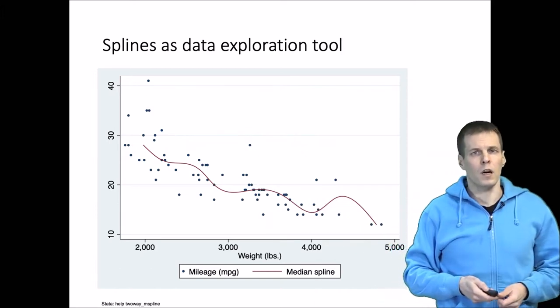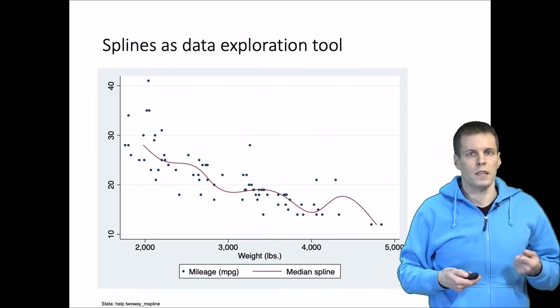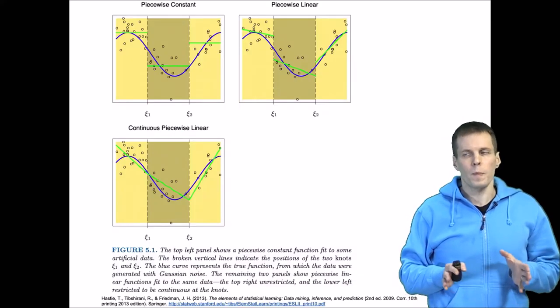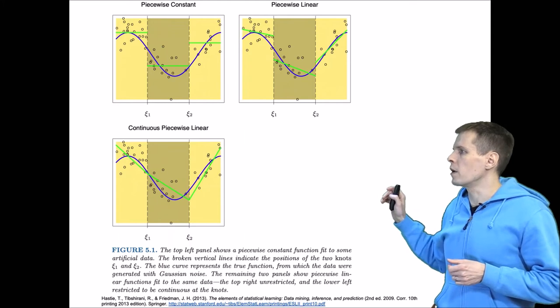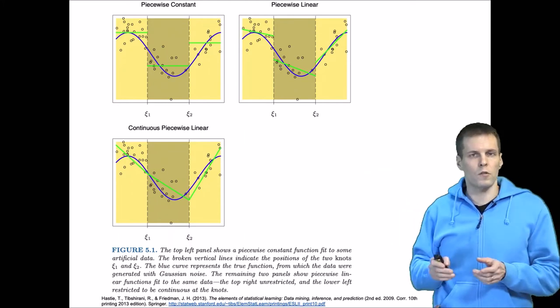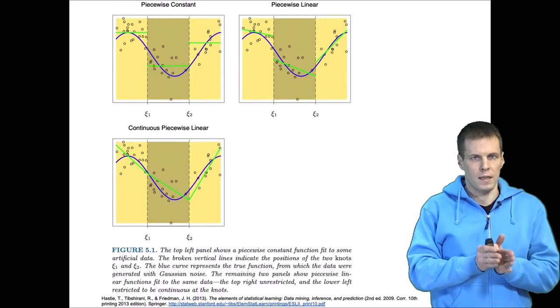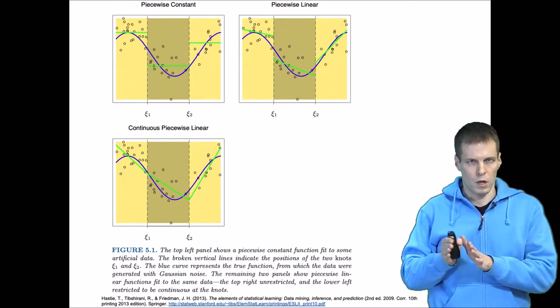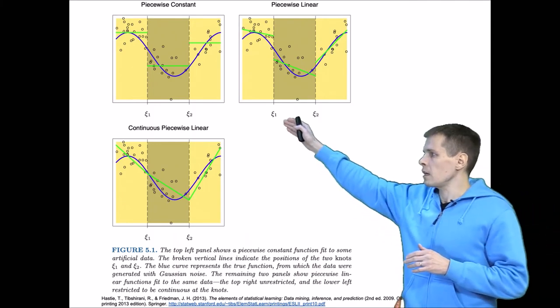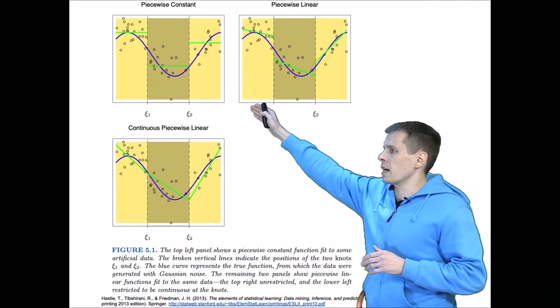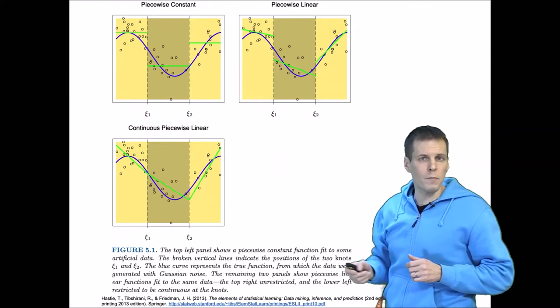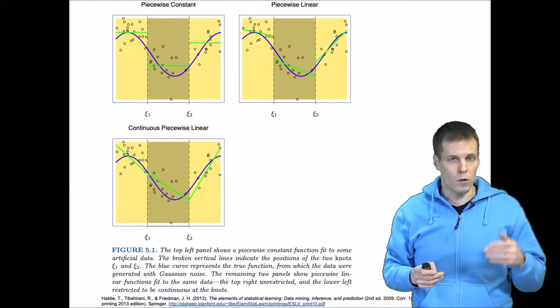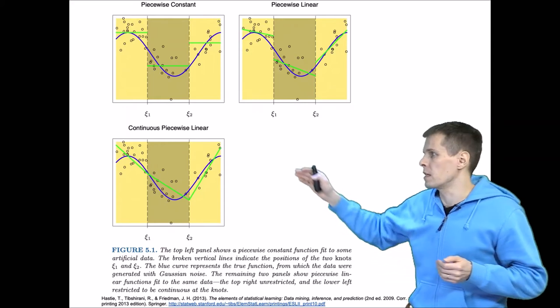Let's take a look at how Hastie and co-authors explain splines. They have this example of a spline regression with two knots. So the knot is a point or a value on the x-axis after which we switch to a different regression model. So here in the first panel we have two knots and we're simply estimating a line that has a different mean or different intercept for each of these parts of the data.